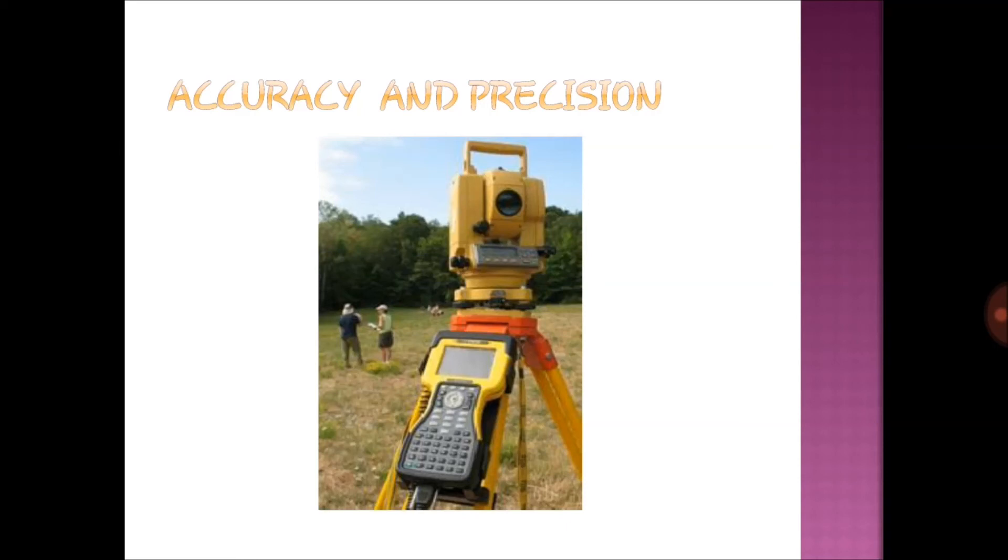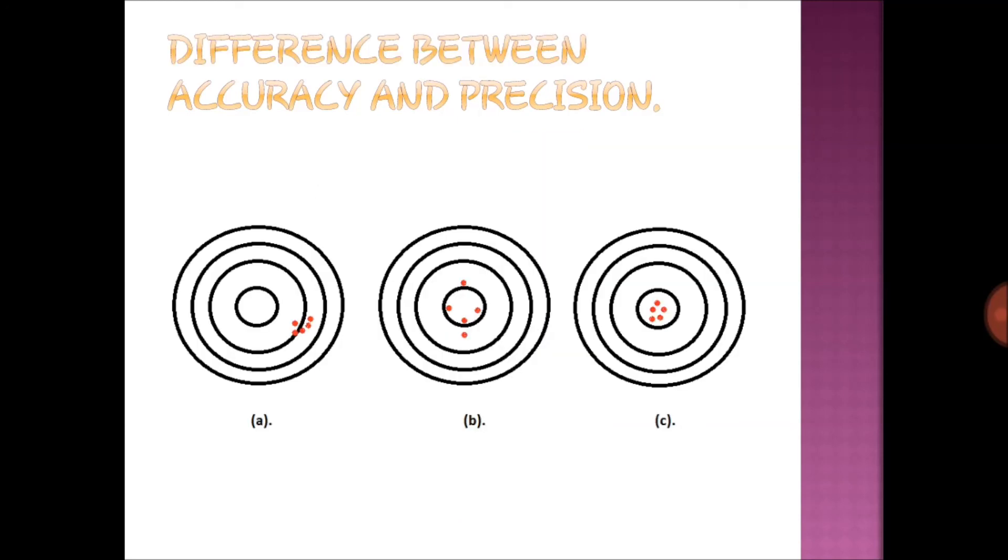Proper choice of instrument and methods of operation will reduce the possibility of errors. A measurement that is precise will also be accurate if it contains no error. To obtain higher precision and high accuracy, take all measurements precisely and eliminate or minimize errors.